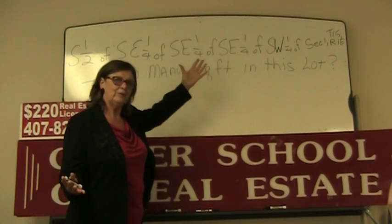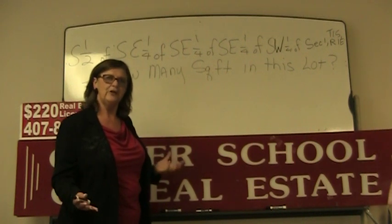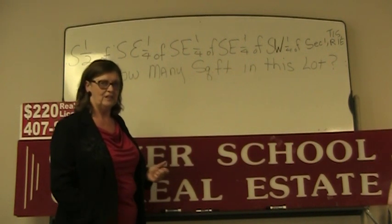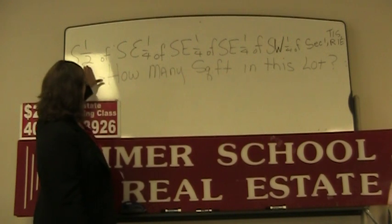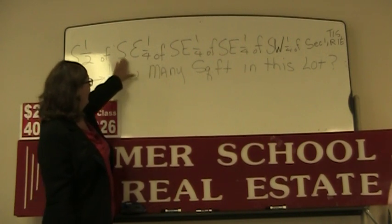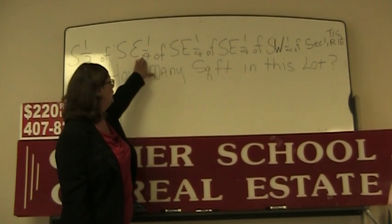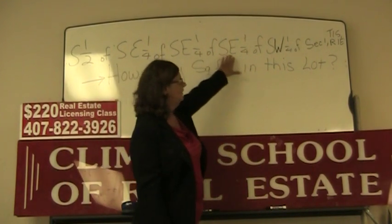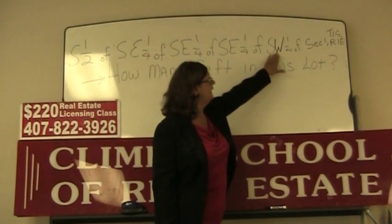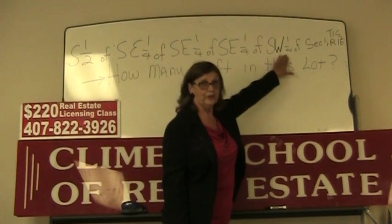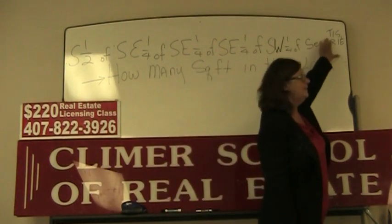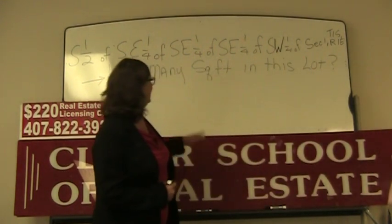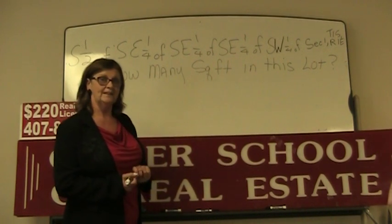Now in class we all learn how to figure out how many acres there are, but how do we know how many square feet? For example, the question says: the south one-half of the southeast one-quarter of the southeast quarter of the southeast quarter of the southwest quarter of section one, township one south, range one east. How many square feet are in this lot?